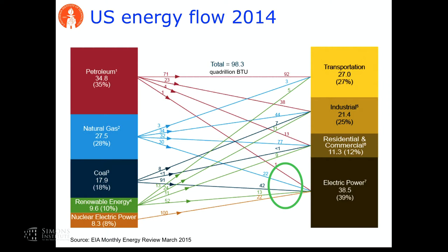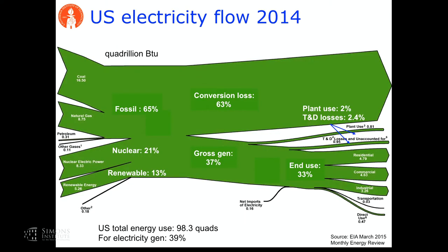If you zoom into the energy, these are the primary sources and these are the applications. If you look at electricity generation, the picture looks like the following. In 2014, we generated slightly less than two-thirds of electricity from fossil — mostly coal and gas. Very little oil by now. Nuclear has been pretty steady at about 20% plus or minus, and then renewables that include hydro. More than 90% of electricity in the US is generated by about 10,000 large bulk generators. Just converting primary sources to electricity, we lose almost two-thirds.